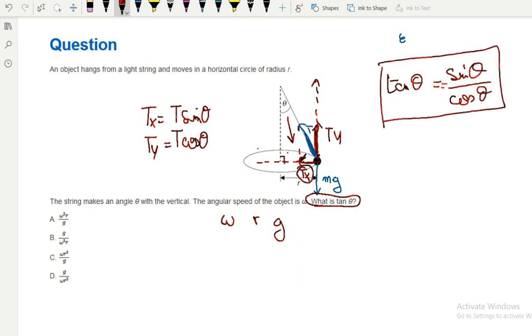Tx is the force responsible for keeping the object in circular motion, which means Tx equals the centripetal force Fc, which is M v squared divided by R, or M omega squared times R since we're looking for omega. Also, Ty and Mg are equal, so Ty equals Mg.